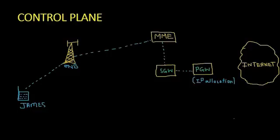IP allocation is the responsibility of PGW. Once the IP address is retrieved, there is a connection between PGW and the internet straight away. Once the IP address is retrieved, the IP address will travel back through the same path from PGW to SGW.